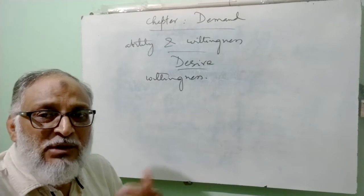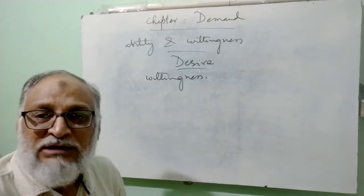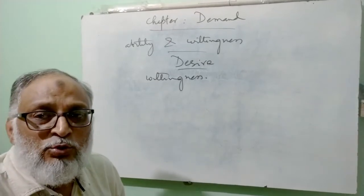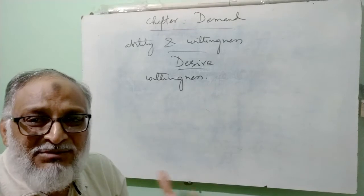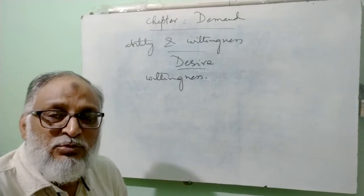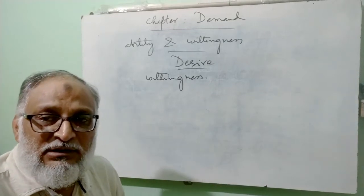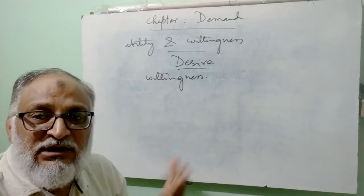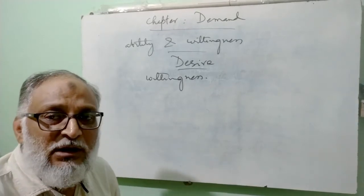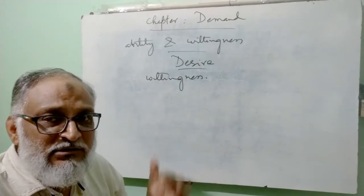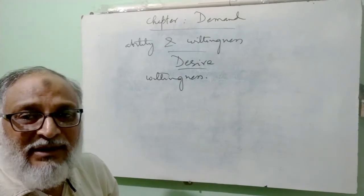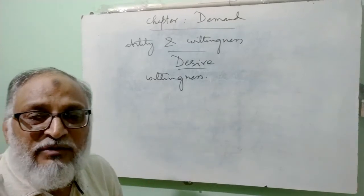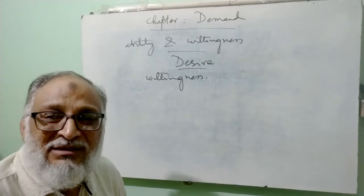After that, suppose a little more money comes to me, and now I think — let me buy a car. I'll travel comfortably from one place to another. And if I can buy it, if I have that much money, then again the purchasing of a car will also be demand.